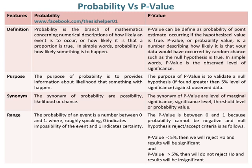The purpose of probability is to provide information about the likelihood that something would happen. Whereas, the purpose of p-value is to validate a null hypothesis — if found greater than the 5% level of significance — against observed data. The synonyms of probability are possibility, likelihood, or chance.